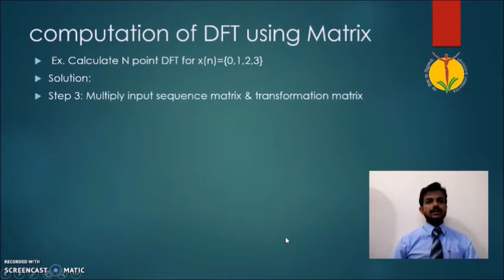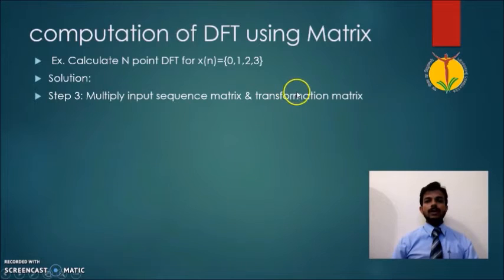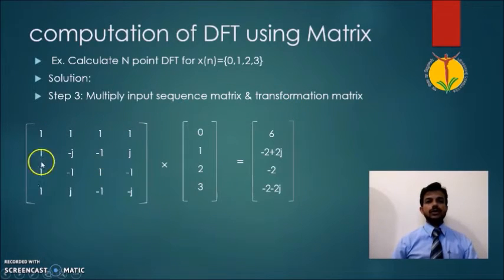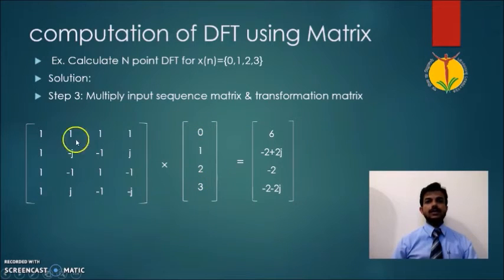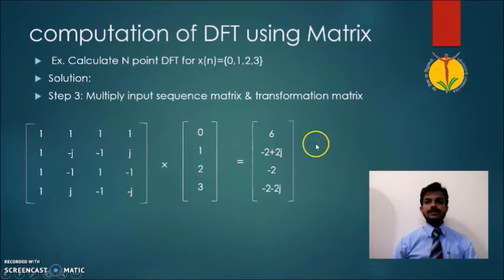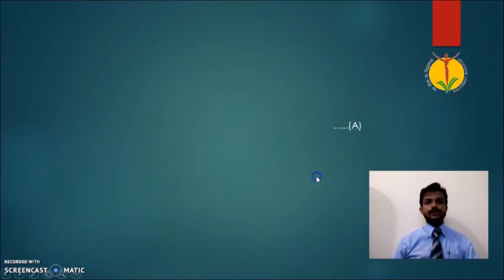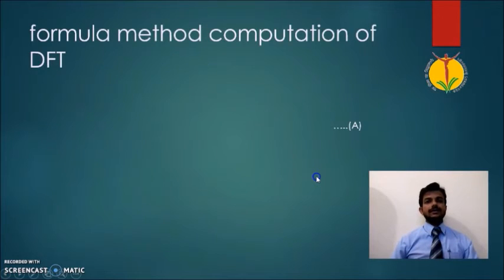The next step is to multiply the transformation matrix with the input sequence matrix. This transformation matrix is multiplied by the input sequence matrix, and the result of this multiplication gives us the DFT of the sequence.